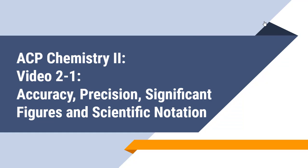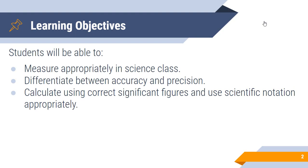In this video we're going to focus on quite a few things - stuff that we've talked about quite a bit in Chem 1. So we are going to focus on accuracy, precision, significant figures, and scientific notation. By the end of this video you should be able to measure appropriately in science class, differentiate between accuracy and precision, calculate using correct significant figures, and use scientific notation appropriately.